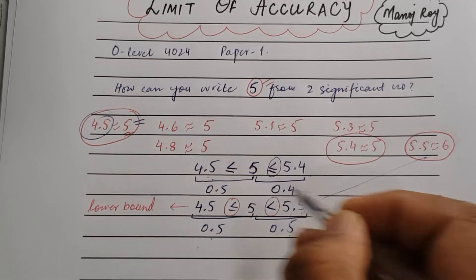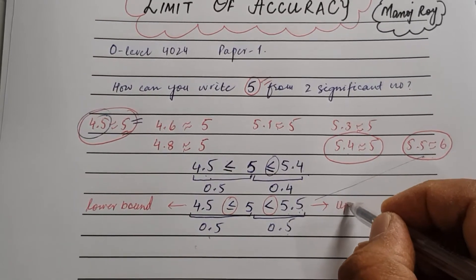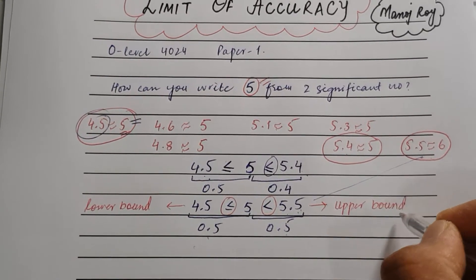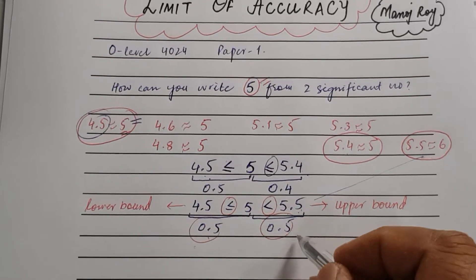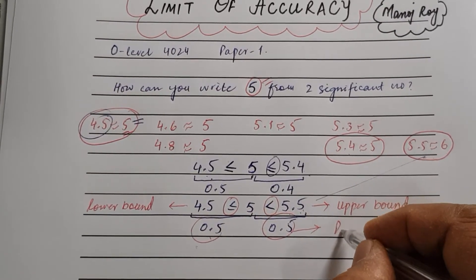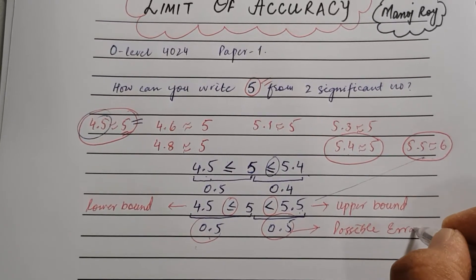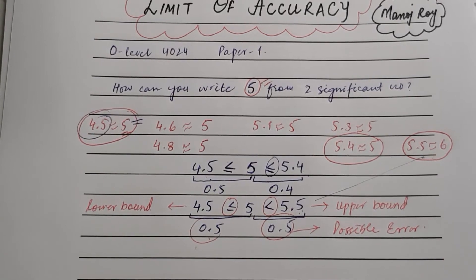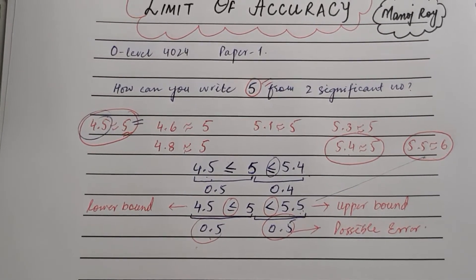The upper value is called the upper bound, and this 0.5 is called the possible error. This was the conceptual explanation of what we mean by limit of accuracy. Now I'll discuss the method to find the limit of accuracy.